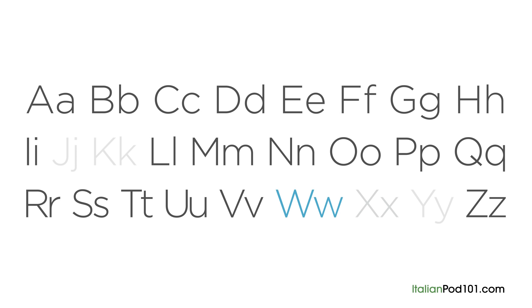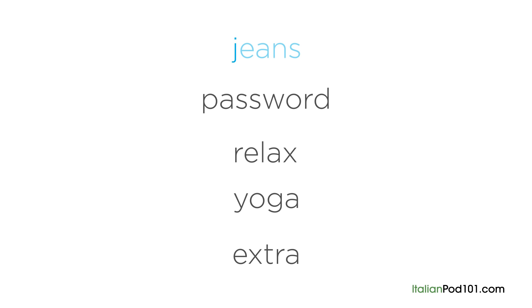Missing are the letters J, K, W, X and Y. They're all considered to be foreign letters in Italian, and are only used for words borrowed from other languages. The most common examples are jeans, password, relax, yoga and extra.